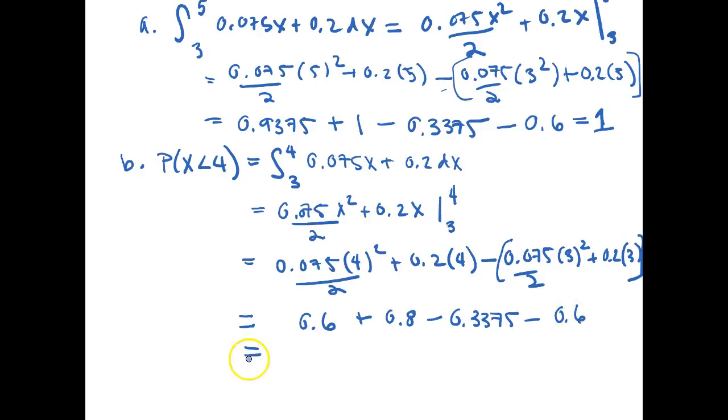So then these expressions are equal to 0.6 plus 0.8 minus 0.3375 minus 0.6. So this is all then equal, if we add these up, to 0.4625. That means the likelihood that x is less than 4 is equal to 0.4625.